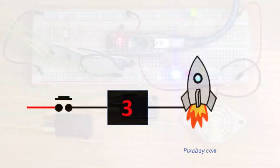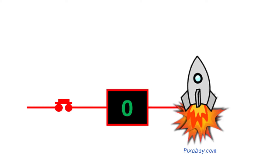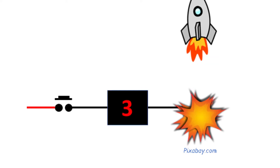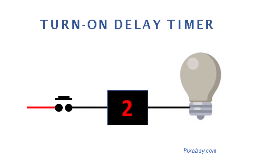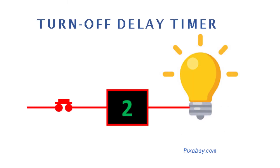Timers can activate or deactivate different output components after a predetermined time interval has elapsed. The available timer types in LDmicro are: turn on delay timer and turn off delay timer.